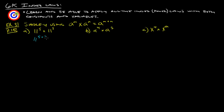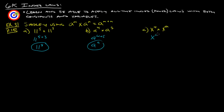Using the first power law — a to the m times a to the n equals a to the m plus n — this really is saying 11 to the 5 plus 3, which gives us 11 to the 8th. Add the exponents: A to the 4 plus 5 gives us A to the 9th. And x to the 4 plus A — that's not a 9, that's an A — and you can't simplify that, so you just leave it like that.